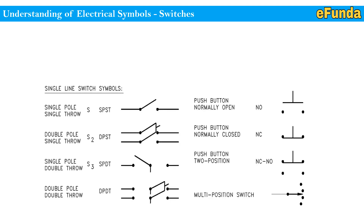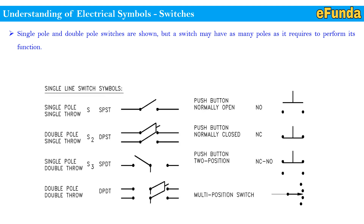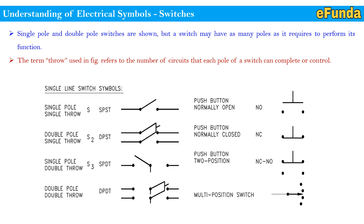Understanding of electrical symbols — switches. The term pole is used to describe switches. The number of points at which current can enter a switch is indicated; single pole and double pole switches are shown, but a switch may have as many poles as required. The term 'throw' refers to the number of circuits that each pole of a switch can complete or control. Symbols shown include SPST, SPDT, and double pole double throw (DPDT) indicated by two lines.